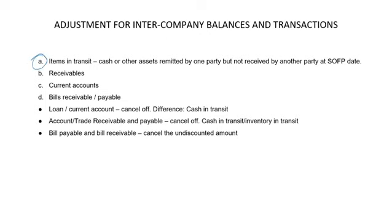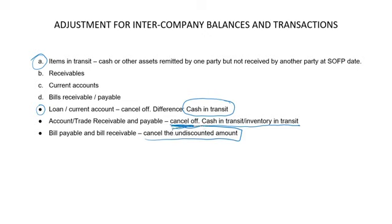To recap, the intercompany balances that need to be adjusted include: items in transit (cash or inventory remitted by one party but not yet received by the other), receivables and payables, current accounts, and loans. For loans or current accounts, cancel off the balances in both the parent and subsidiary accounts; any difference is recorded as cash in transit. For account receivables and payables, cancel them off as well. For bills payable and bills receivable, cancel the undiscounted amount only.